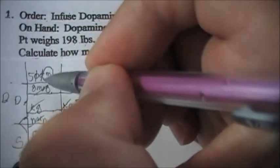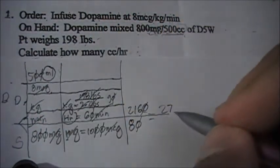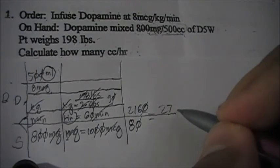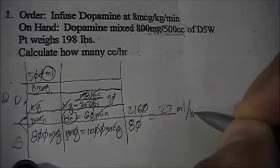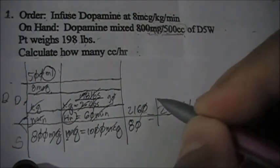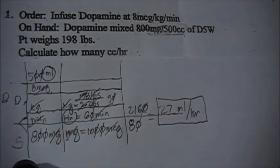Remember you have 27 mls there and an hour there, so 27 ml per hour. So which one is easier, doing the dimensional analysis or this modified equation that I made?